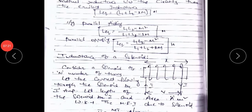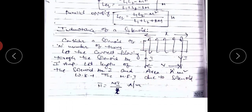Next is the inductance of a solenoid derivation. Consider a solenoid having N number of turns, with current flowing through the solenoid equal to I, length of the solenoid equal to l meters, and cross-sectional area equal to A square meters. The magnetic field intensity due to the solenoid is H equals N·I divided by l amperes per meter.